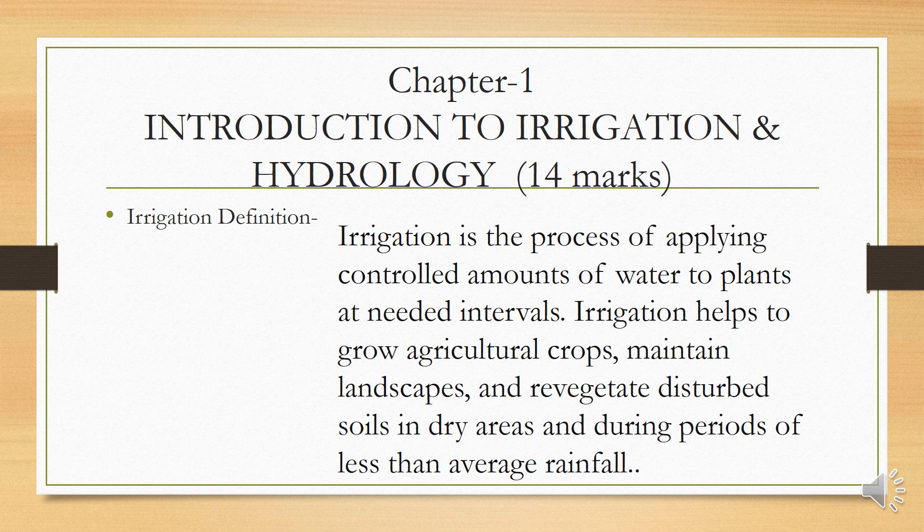Irrigation is done by using different methods. Why do we apply water? So that plants and agriculture can grow properly. Crops can grow fast, especially in areas where rainfall is very low. In such places, by using different types of irrigation, we can provide water through various irrigation methods.